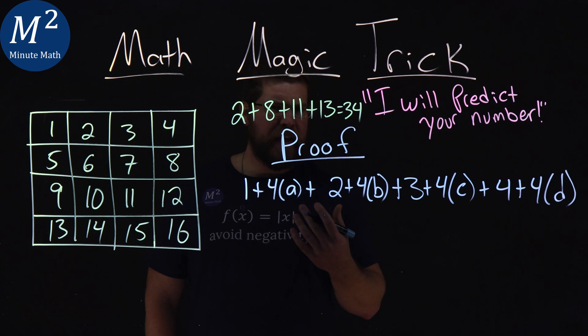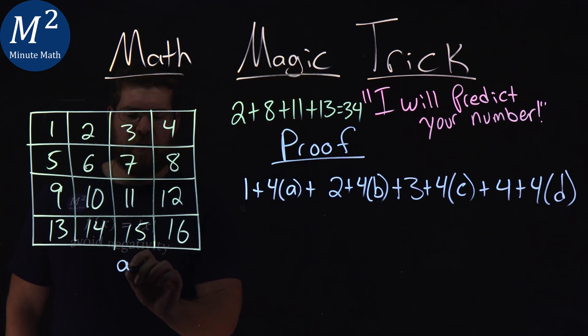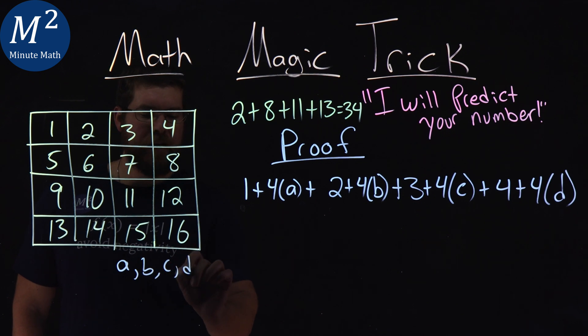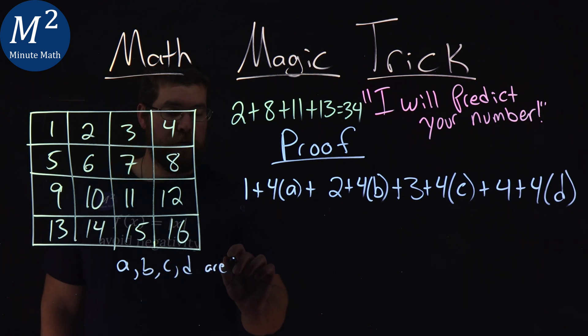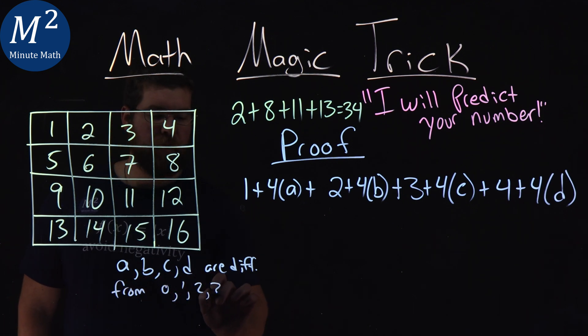So our rules for a, b, c, and d is that they have to be different numbers, and those numbers can be from zero, one, two, and three. So a, b, c, and d are different numbers from zero, one, two, and three.